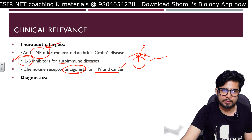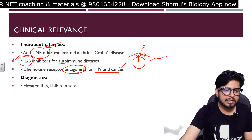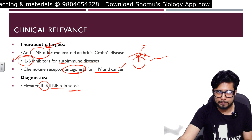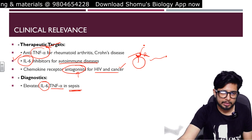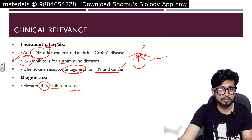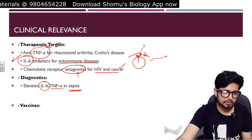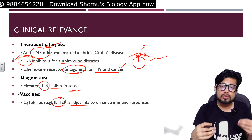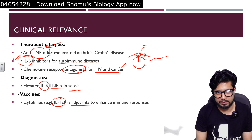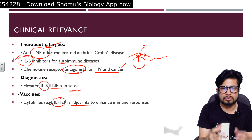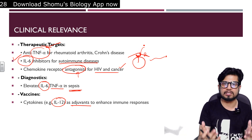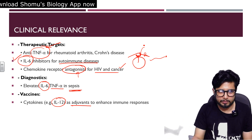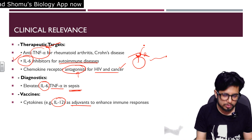For diagnostic purposes, elevated levels of interleukin-6 and TNF-alpha in the bloodstream indicate sepsis, a life-threatening condition. In vaccines, cytokines like interleukin-12 are used as adjuvants to enhance the immune response when a vaccine is administered, because IL-12 is part of regular immune pathways and can boost the body's immune responses.